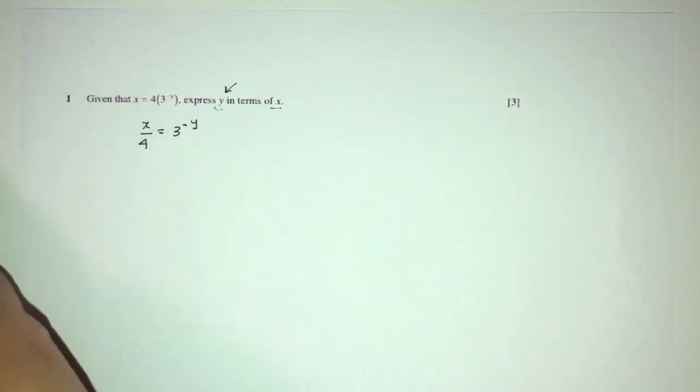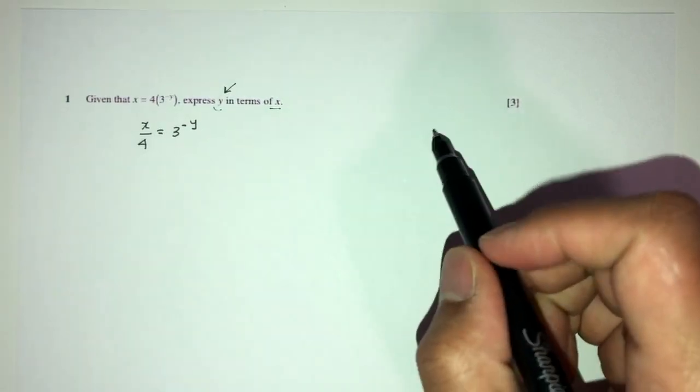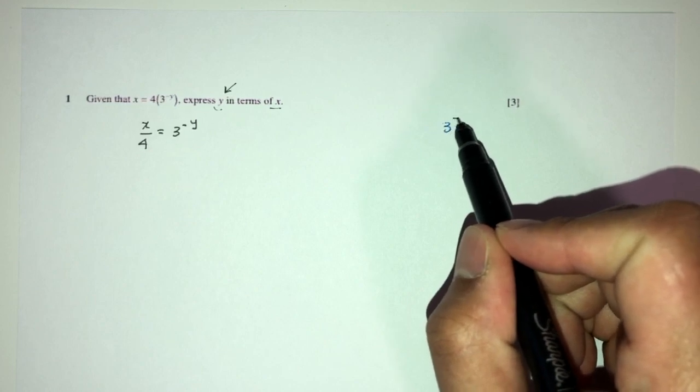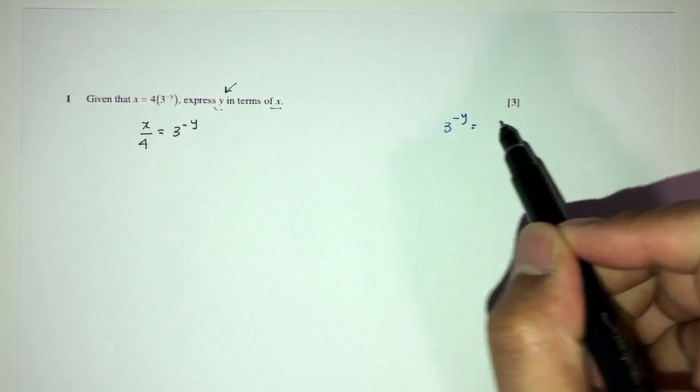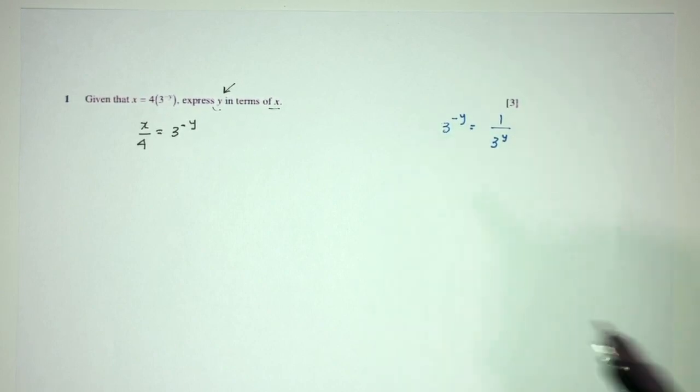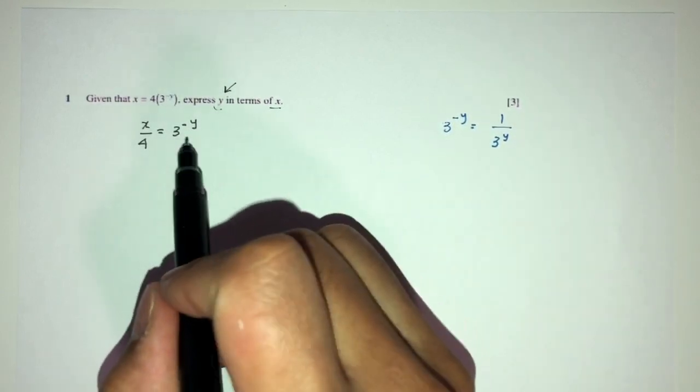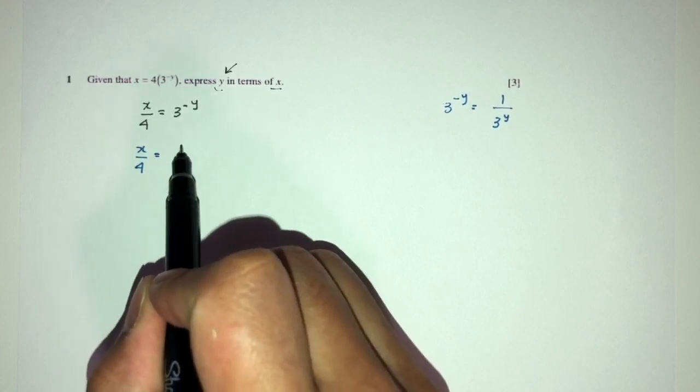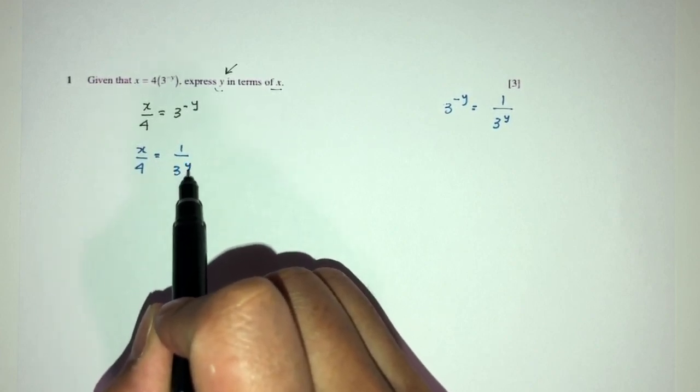We have to use the laws of indices here. If we have 3 power minus y, this can also be written as 1 over 3 power y. Makes sense, right? So, you have x over 4 is equal to 1 over 3 power y.